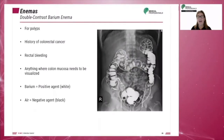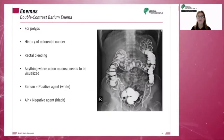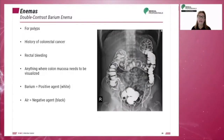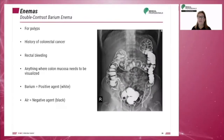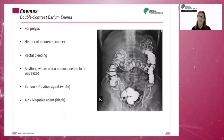A double-contrast barium enema involves using barium and air to coat the inner walls of the colon. This is helpful in diagnosing polyps and is used on patients with a history of colorectal cancer, rectal bleeding, or other conditions where the colon mucosa needs to be visualized. On the radiograph, the barium is seen as white areas and the negative air contrast is seen as black areas. For the procedure, only a small quantity of barium is administered, followed by air, and the patient is turned into various oblique positions to move barium into colon components.